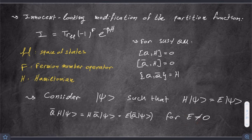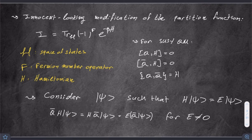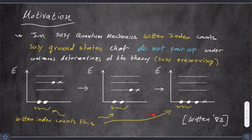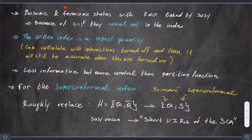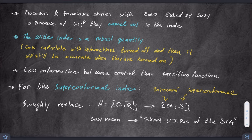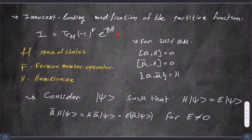Notice that the only thing this partition function is measuring is an exponential weighted by the energy of the state, so psi and Q-bar psi have the same contribution. Because of the minus one to the F factor, they pairwise cancel. Bosonic and fermionic states with positive non-zero energy are linked by supersymmetry, and because of this minus one to the F factor, they cancel exactly in the index. Therefore, the only thing the index counts are states with zero energy, and all these states in this example contribute just a factor of one.